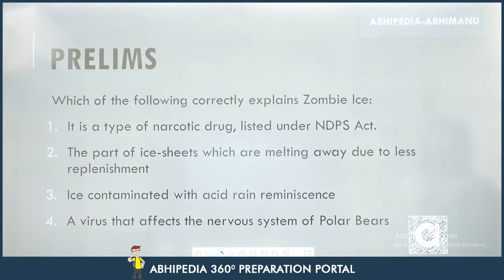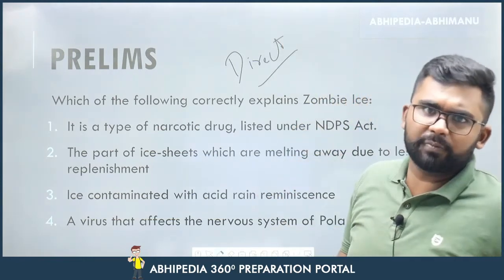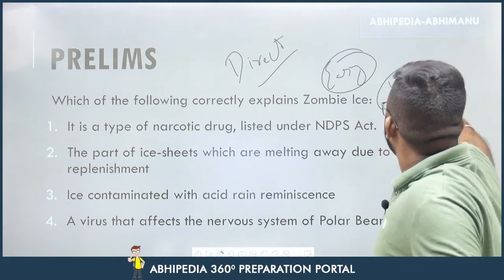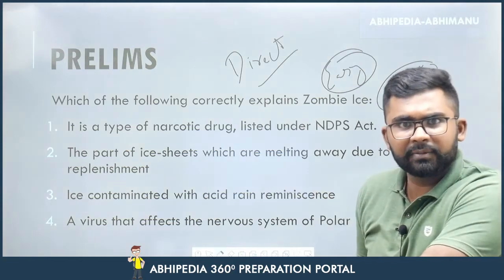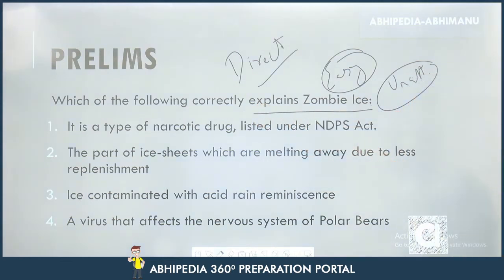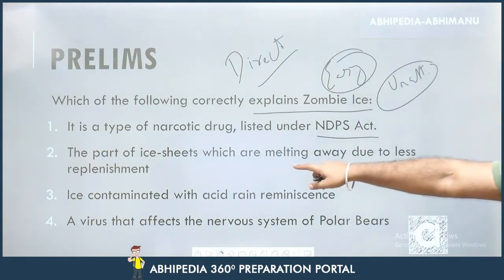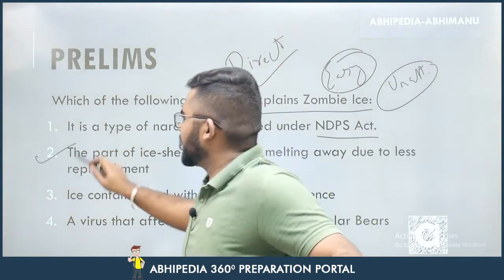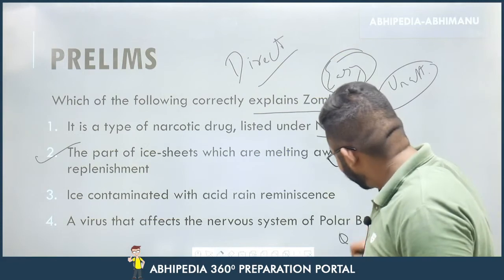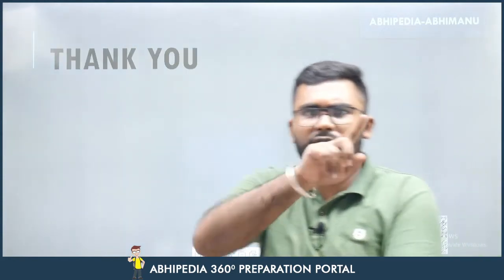Let's look at a practice question. You can pause the video to attempt it on your own. It is a direct question — if you have studied Zombie Eyes, it falls under the easy category; if not, it will be unattemptable. The question is: Which of the following correctly explains Zombie Eyes? Options: (1) It is a type of narcotic drug listed under the NDPS Act. (2) It is the part of ice sheets which are melting away due to less replenishment. (3) Ice contaminated with acid rain. (4) A virus that affects the nervous system of polar bears. The answer is option 2. The other options are distractors.